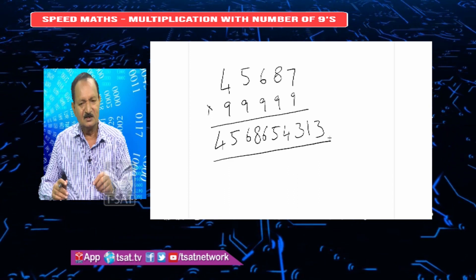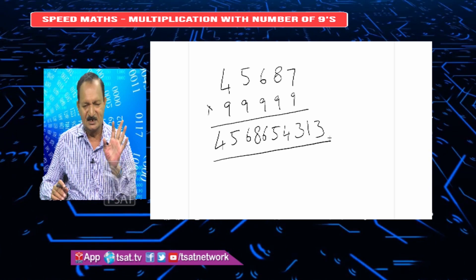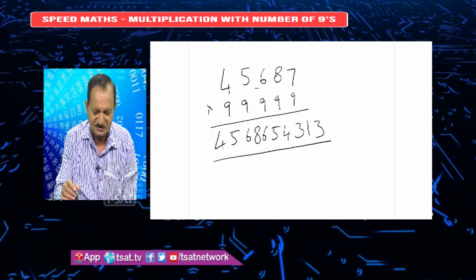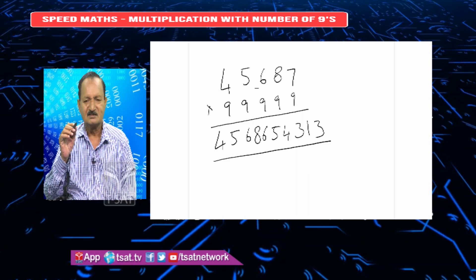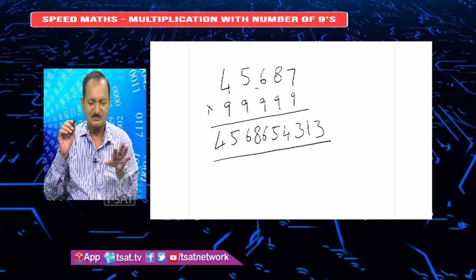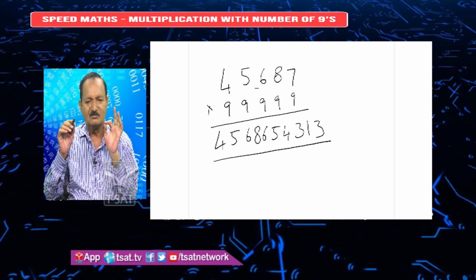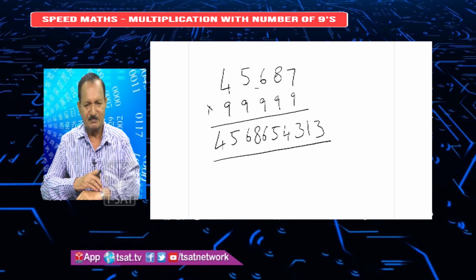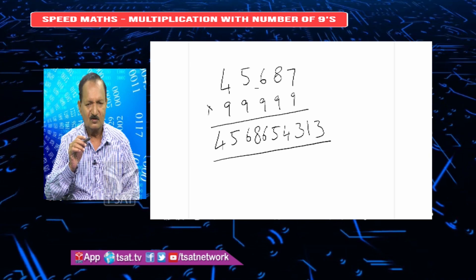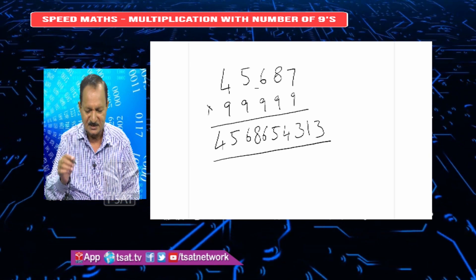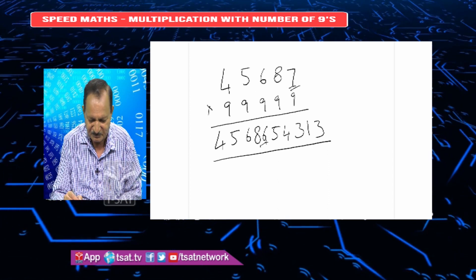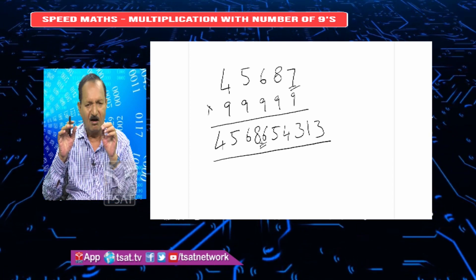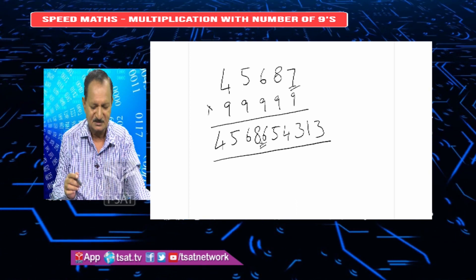As I have written now, anybody can write like this simply in a few seconds, in a single line — there would not be any steps in Speed Math. Here, how we have done this problem: 45687 into 5 equal 9s — how to do? I will tell you. Please observe. What to do is: first, subtract 1 from the top number. The top number is 45687. You subtract 1 from that number, that is 45686 — this 7 becomes 6.